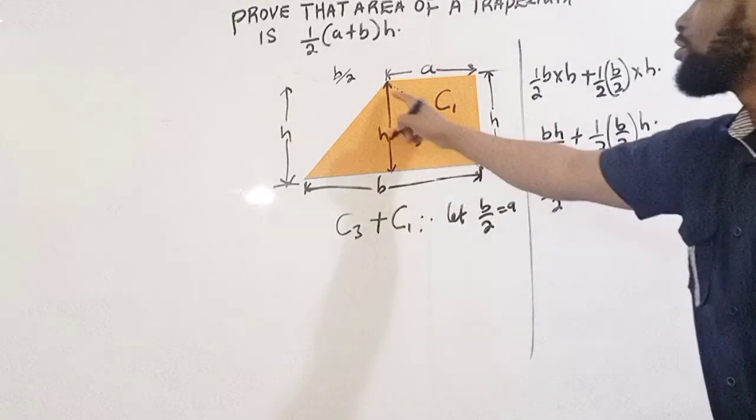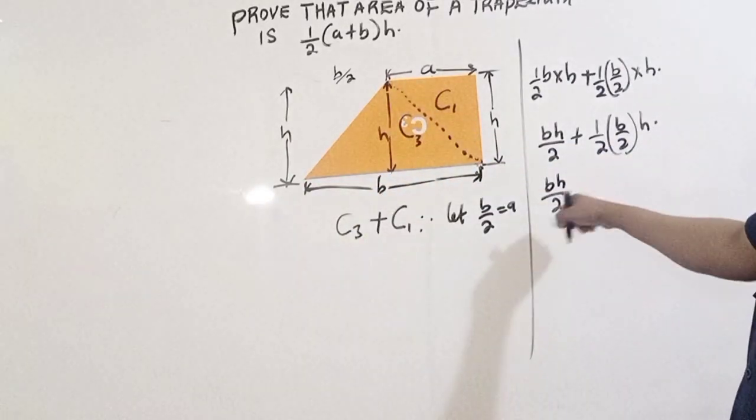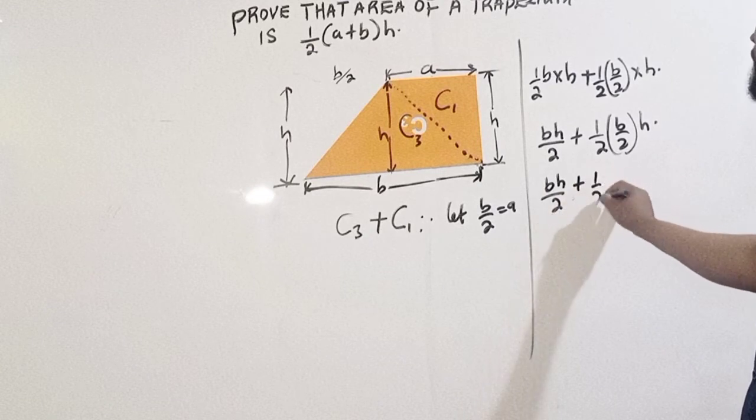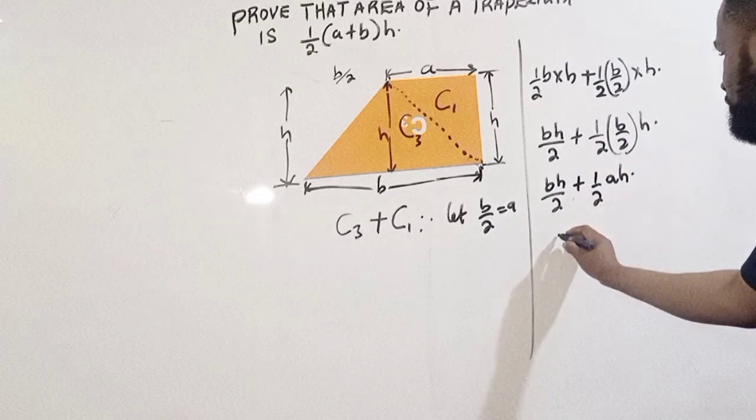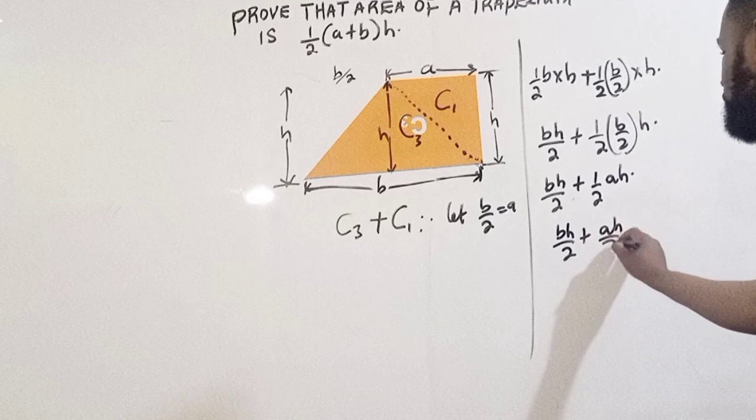Then plus 1 over 2 a h, because b over 2 is a. So I'm going to have bh over 2 plus ah over 2.